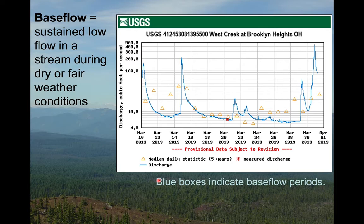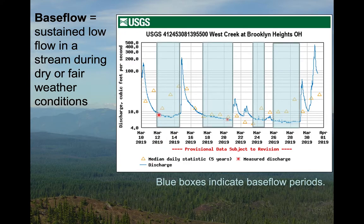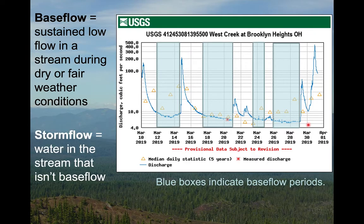Before we do that, we need to define some basic terms you'll be hearing for the rest of the course. The first is base flow — the low flow in a stream when it's not raining. I'm going to add some blue boxes to this example hydrograph. These blue box periods are the base flow periods: times when it is not raining, when the stream isn't rising, and when it isn't falling very quickly. In between the blue boxes are storm flow periods — times when water is entering the stream as a result of precipitation that's occurring or has recently occurred. We're going to have different stream flow generation mechanisms operating during storm flow periods versus base flow periods.